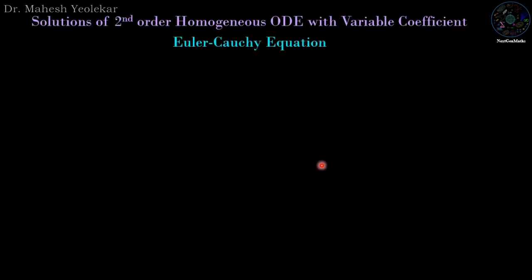The standard form of the Euler-Cauchy ordinary differential equation is x squared y double dash plus ax y dash plus by equal to zero.